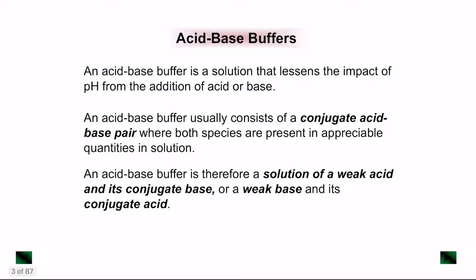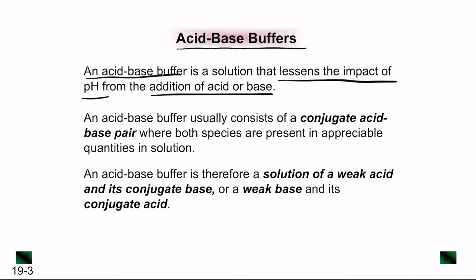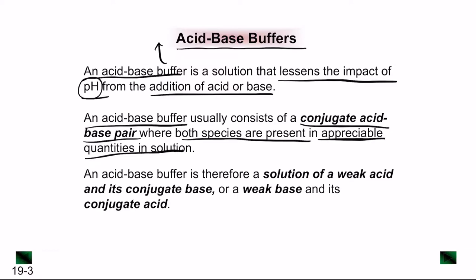Let's start with the understanding of a buffer, commonly known as an acid-base buffer. An acid-base buffer is a solution that lessens the impact of pH from the addition of an acid or a base. Think of buffers as relieving compounds used to lessen the impact of pH when you add acid or a base. An acid-base buffer usually consists of a conjugate acid-base pair where both species are present in appreciable quantities in the solution.